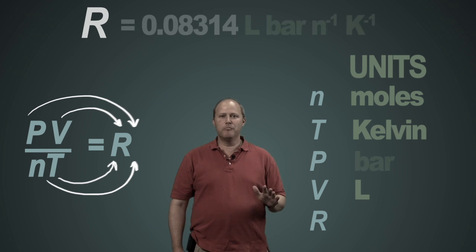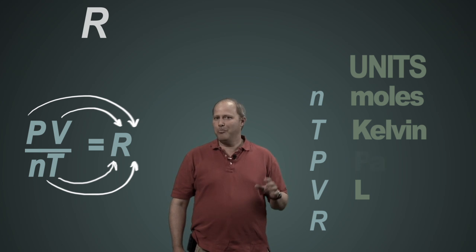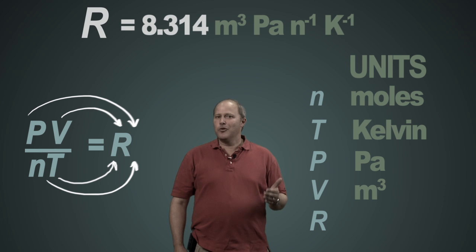But if you had pressure of bars, it's 0.08314 liter bars per Kelvin mole. Or alternatively, maybe you have Pascal cubic meters, then it's 8.314. And so the answer to which is the correct one, it's the one that makes the units work for the pressure and the volume that you're working with.